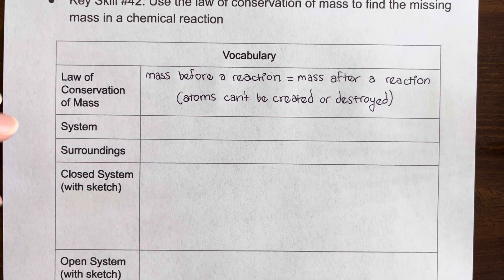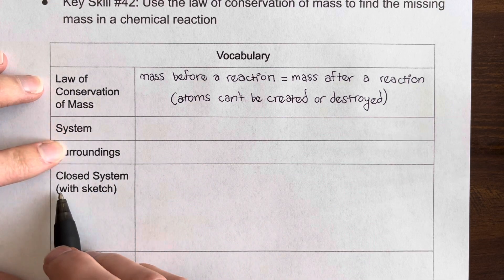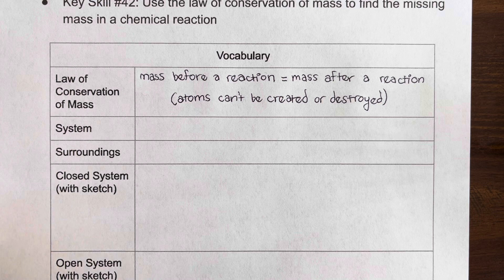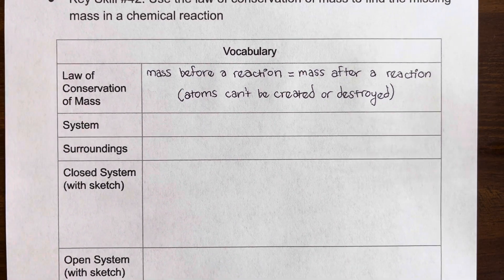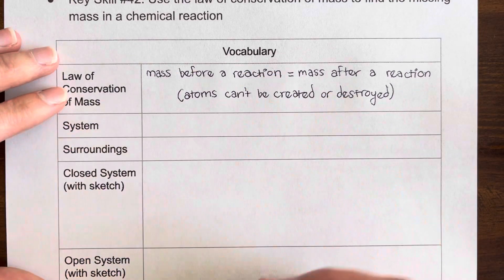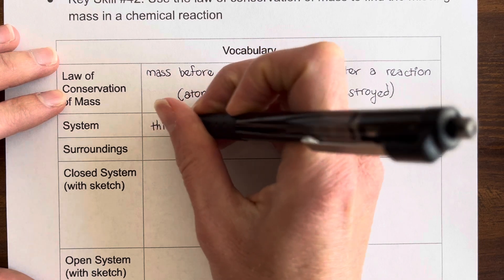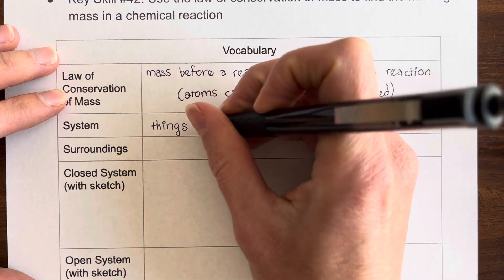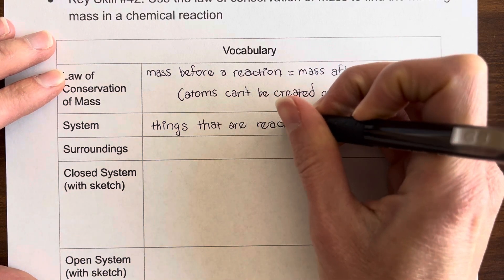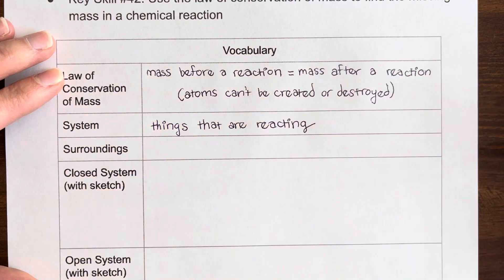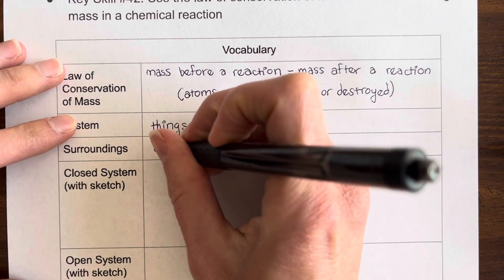So a couple words you need to know are system and surroundings. In science in general, these are very common terms. Whenever we're talking about a system, we're talking about the thing that we are studying. And often in chemistry, we are studying reactions. So for this particular section, the system is going to be whatever things are reacting. And then the surroundings is going to be everything else, so all of the things outside the reaction.